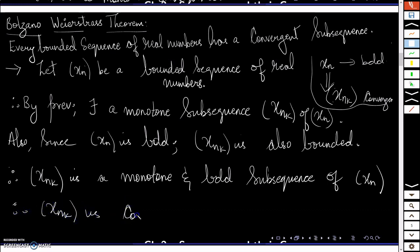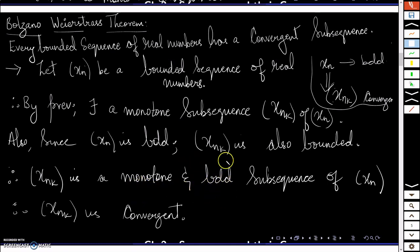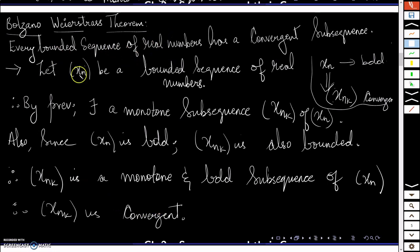A monotone and bounded sequence converges: if it is increasing and bounded above it converges, and if it is decreasing and bounded below it converges. Therefore xNk is a convergent subsequence of xn. This is exactly what the Bolzano-Weierstrass theorem asserts, and we have proved it.